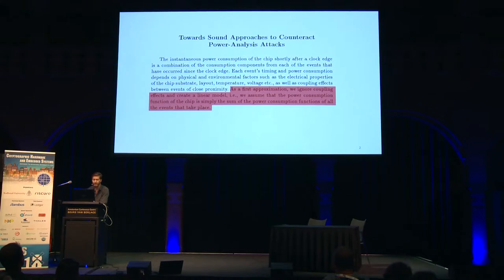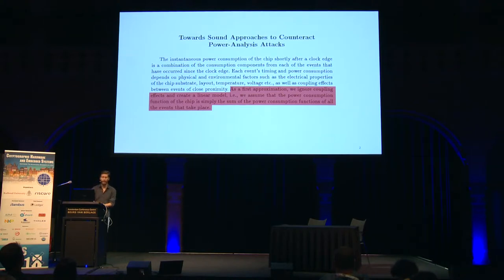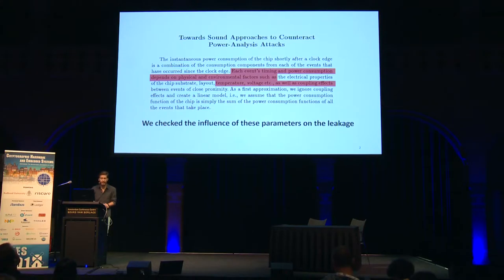In a first assumption, they make the reasonable assumption that coupling and other effects can be ignored, starting from a linear model where the total power consumption of the circuit should be decomposable as the individual power consumptions of the shares of the masking scheme. They are aware, of course, that this is not always satisfied — effects like temperature, voltage, and coupling can violate that assumption. That is exactly what we investigate in this paper.